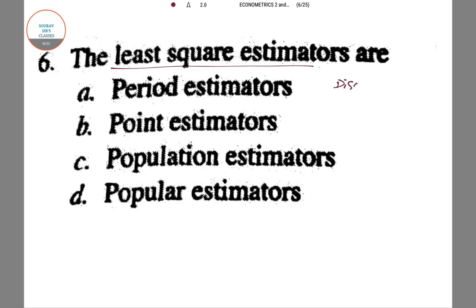So hence we can call it a point estimator. It is not on the basis of population. Popular is not at all the answer. This is not mathematically used much. So this time answer number B is correct.